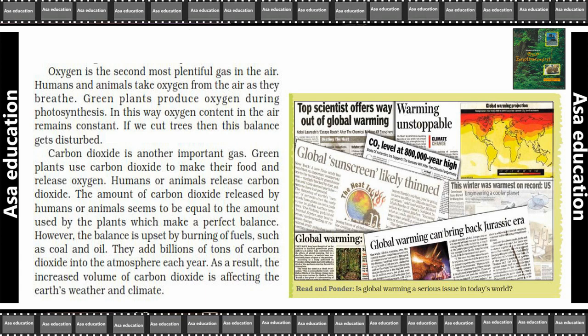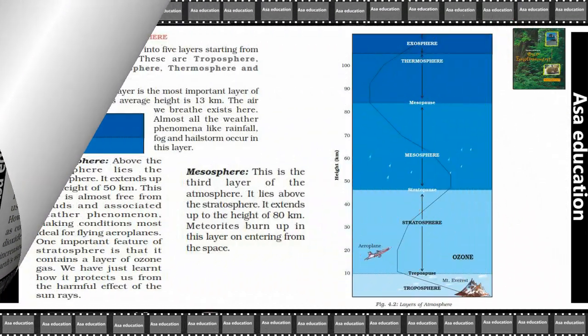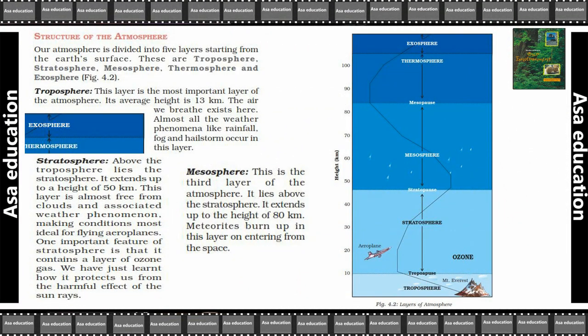The structure of the atmosphere — our atmosphere is divided into 5 layers starting from the earth's surface. These are troposphere, stratosphere, mesosphere, thermosphere and exosphere. Troposphere — this layer is the most important layer of the atmosphere.